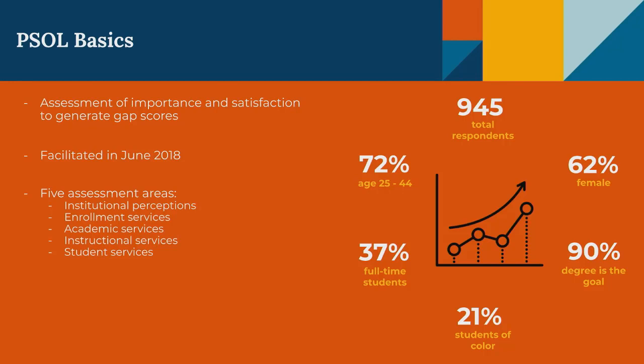37% of those students were full-time — we sometimes forget that over a third are pursuing their degree full-time online. 21% identified as students of color, which is exciting to see as we serve a diverse population. 90% said a degree is their ultimate goal, even some non-degree students who may eventually matriculate into a full degree-seeking status. Over 60% of respondents were female, pretty much in line with our overall population.